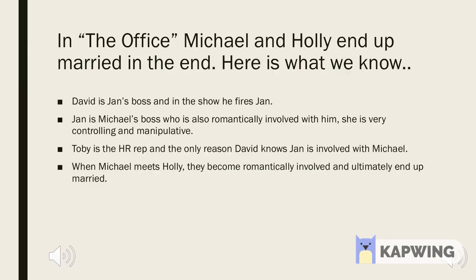In the show The Office, we know that Michael and Holly end up getting married. The characters that influence this final event the most are Toby the HR rep, David the CEO of the company, Jan who is Michael's boss and romantic partner at the time, and of course Michael and Holly. Some of these people inhibit the actions of other people, which is similar to a regulatory protein that binds to DNA and inhibits transcription, therefore altering gene expression.